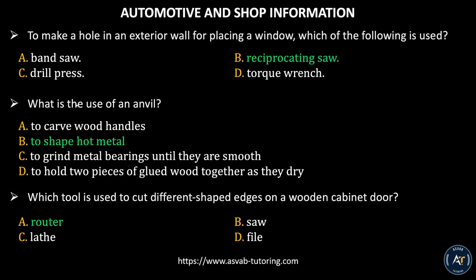The first question: to make a hole in an exterior wall for placing a window, which of the following is used? Option A, band saw. Option B, reciprocating saw. Option C, drill saw. Option D, torque wrench. The correct answer is Option B, reciprocating saw. You need a reciprocating saw to make a hole in an exterior wall to place a window.